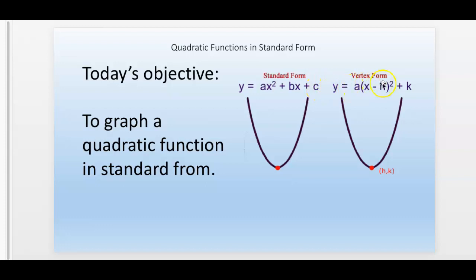And we just got done with vertex form. The nice thing about vertex form is it's pretty easy to find the vertex because it's h, k. It's the x coordinate of the vertex and the y coordinate of the vertex.